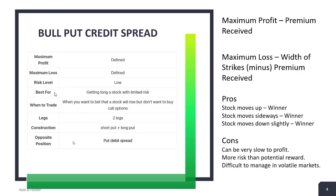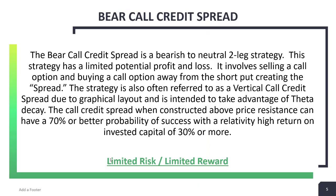We don't need to spend quite as much time on the bear call credit spread since we've already covered many of these concepts. The bear call credit spread is the same structure — a neutral to bearish two-leg strategy with limited profit and limited loss. You sell one option nearer the money and buy one further out, creating the spread. These are called vertical call spreads. Set up correctly above a price resistance level in the chart, you have a high probability of success in these trades.